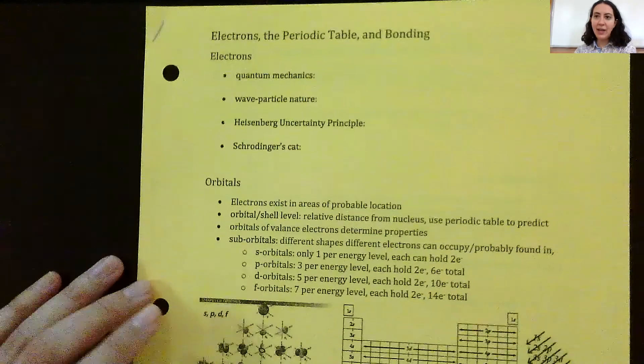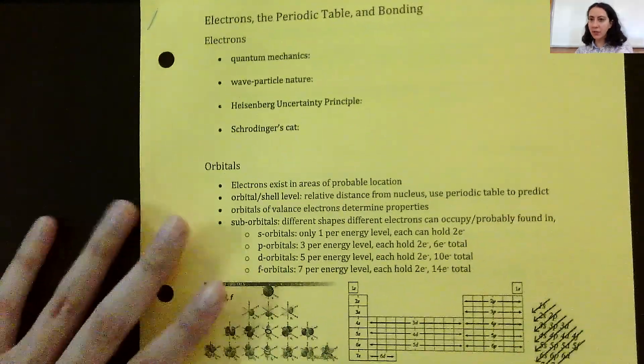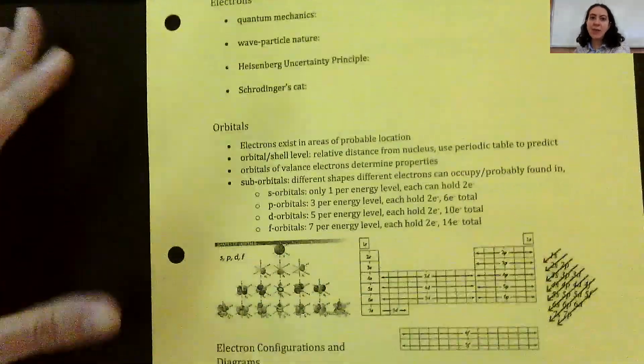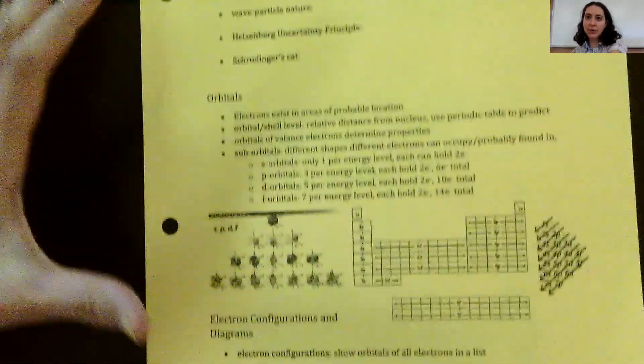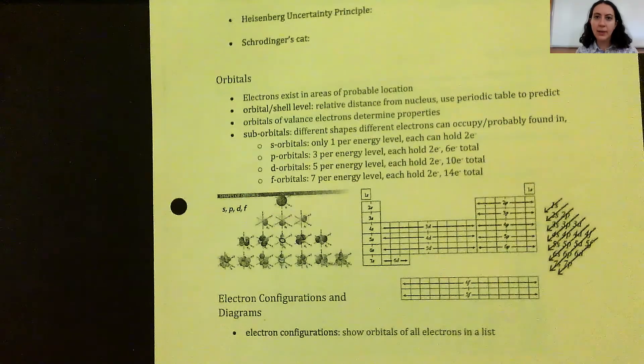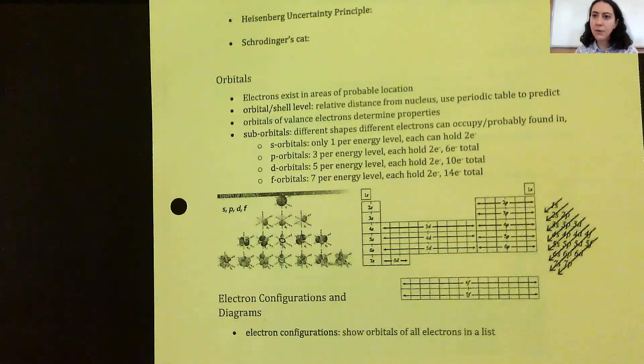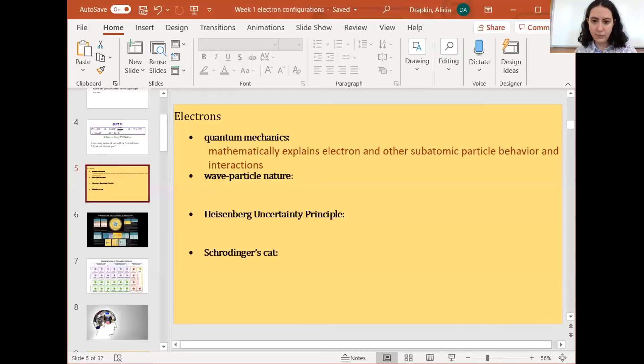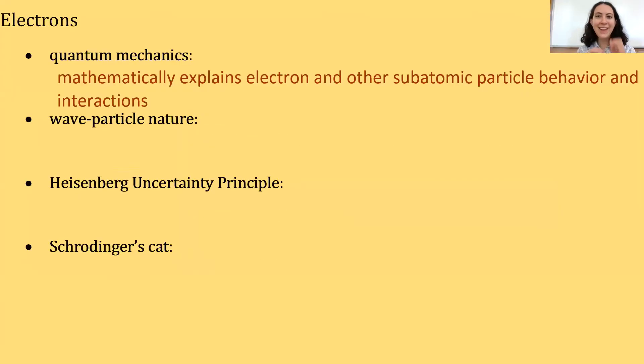So that's kind of the whole scope of the unit that we'll go through. But let's start from the very beginning. And what we'll do for this particular video is I'll go over electrons and then the next video we'll talk about orbitals.